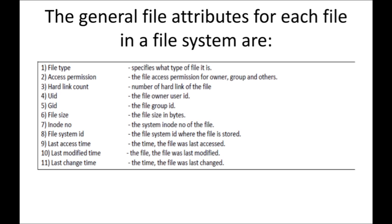Next is access permission. When you create a file, you can give different permissions for a file. For example, read permission, write permission, execute permission. If you give read permission, the file can only be read. If you give write permission, the file can be read and also written to. So access permission is one type of attribute.